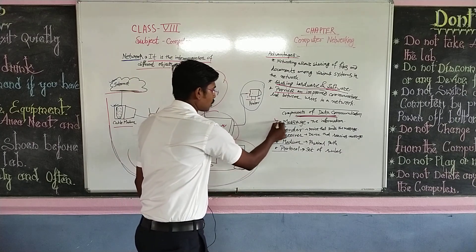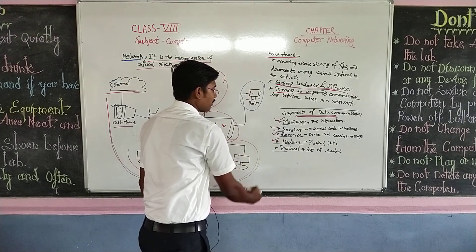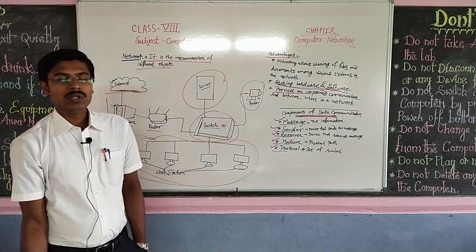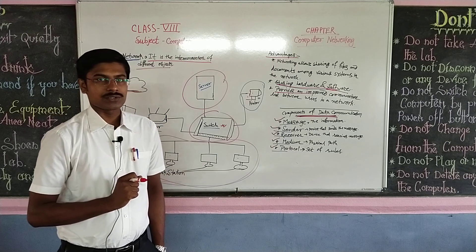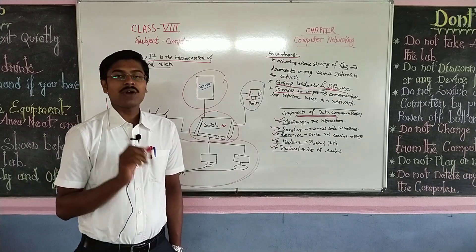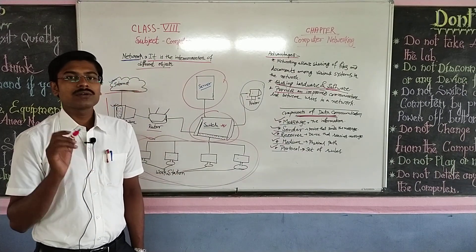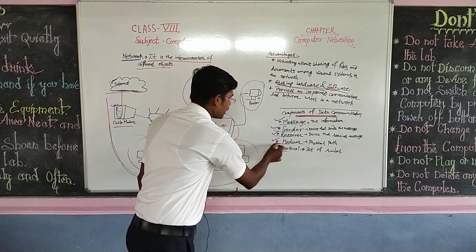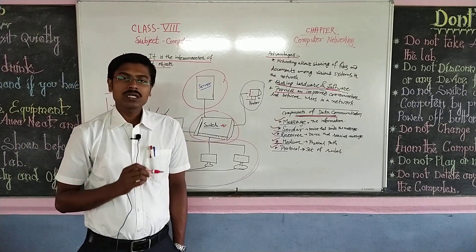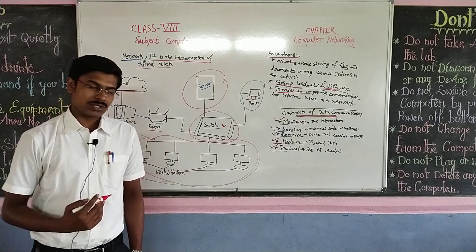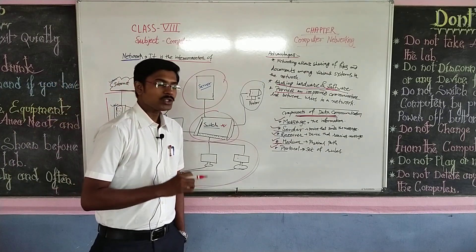The components of data communication are: first, message — the information is called the message. Second, sender — the device that sends the message. Third, receiver — the device that receives the message. Fourth, medium — that means the physical path through which the message will pass from one workstation to another. And the last one is protocol — a set of rules for data communication.